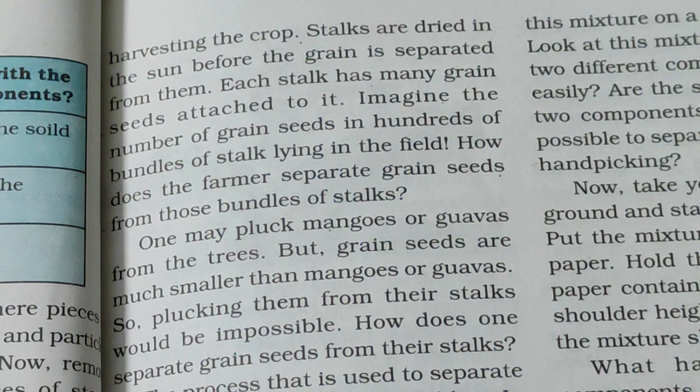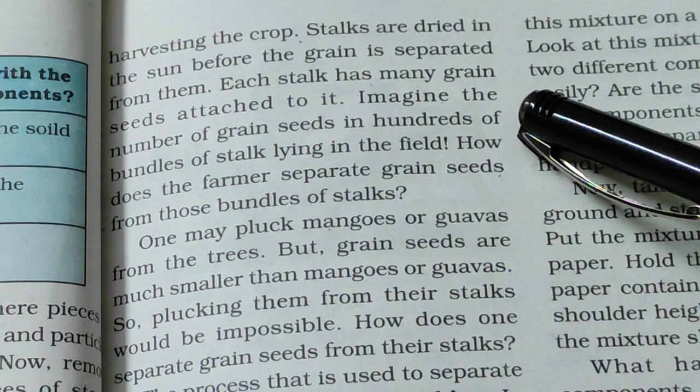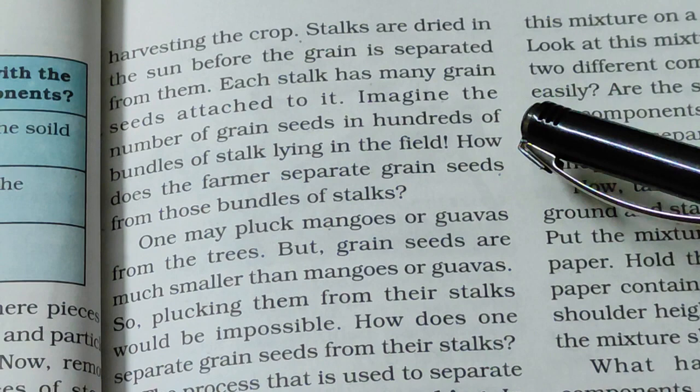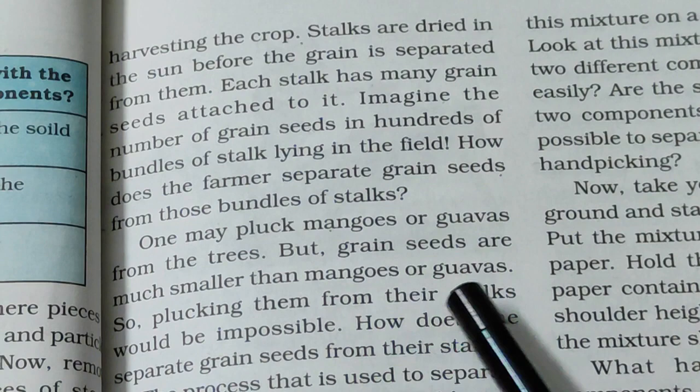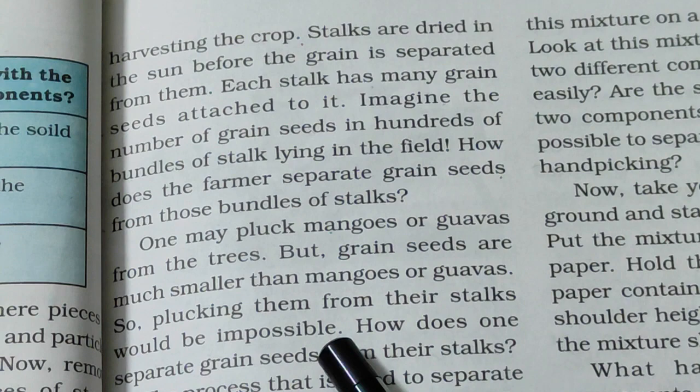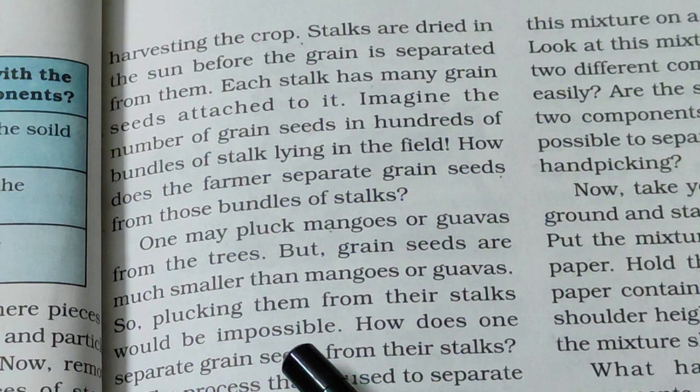Imagine the number of seeds in hundreds of bundles of stocks lying in the field. Plucking each grain from the stock individually — as we pluck mangoes or guavas — is impossible because grain seeds are much smaller. So a different method is needed to separate grain seeds from their stocks.